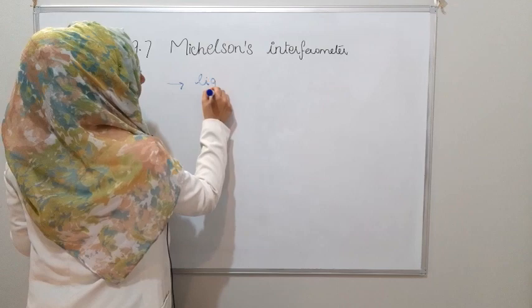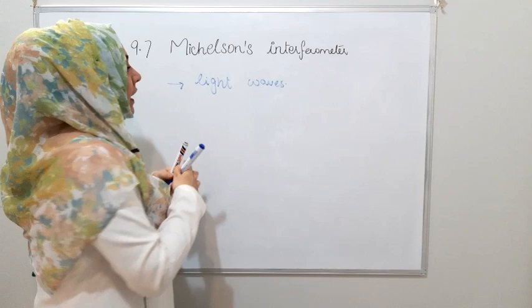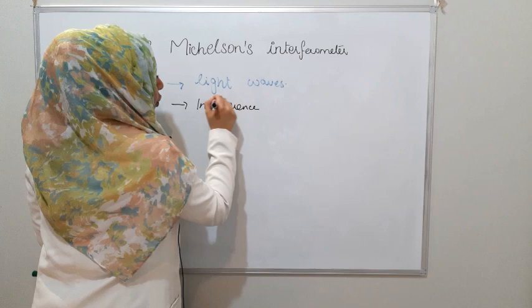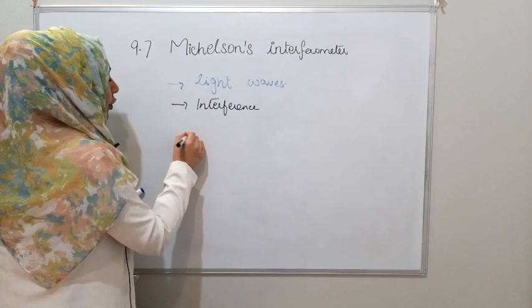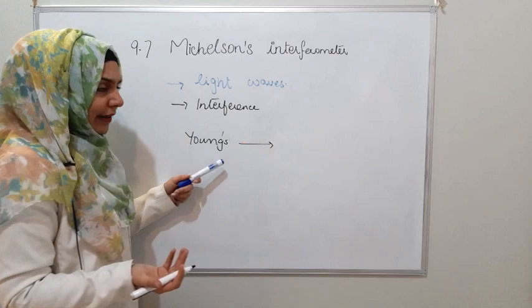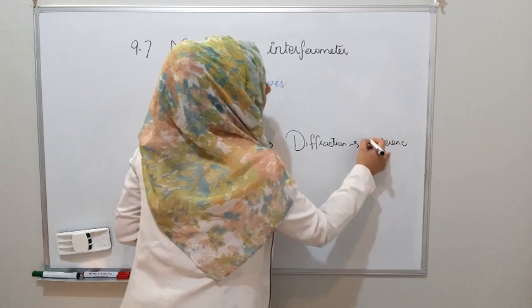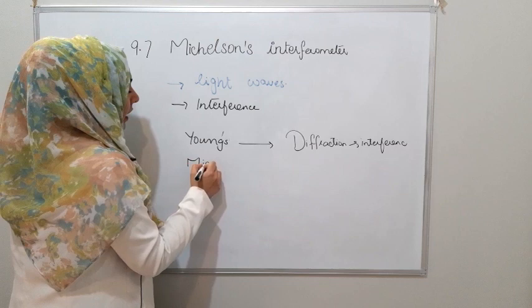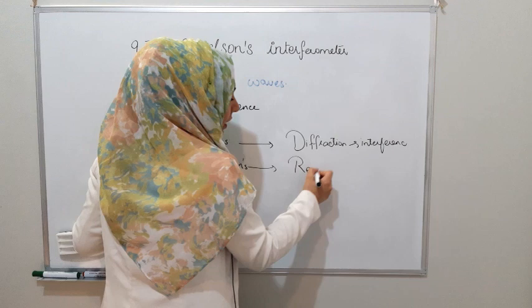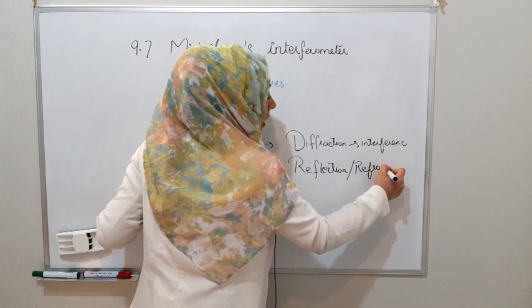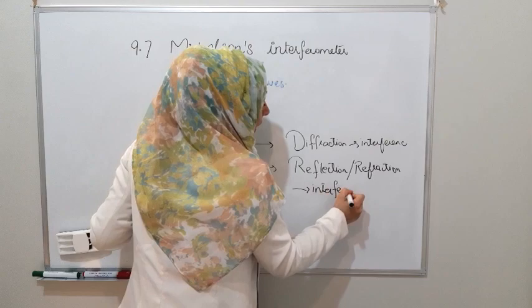We need to talk about light waves and how they interfere. If we want to see the difference between Young's Double Slit experiment and Michelson's Interferometer: in Young's Double Slit, we know it involves diffraction, and after diffraction the interference pattern is generated. But in Michelson's Interferometer, after reflection from mirrors, the light waves interfere. This is the main difference.